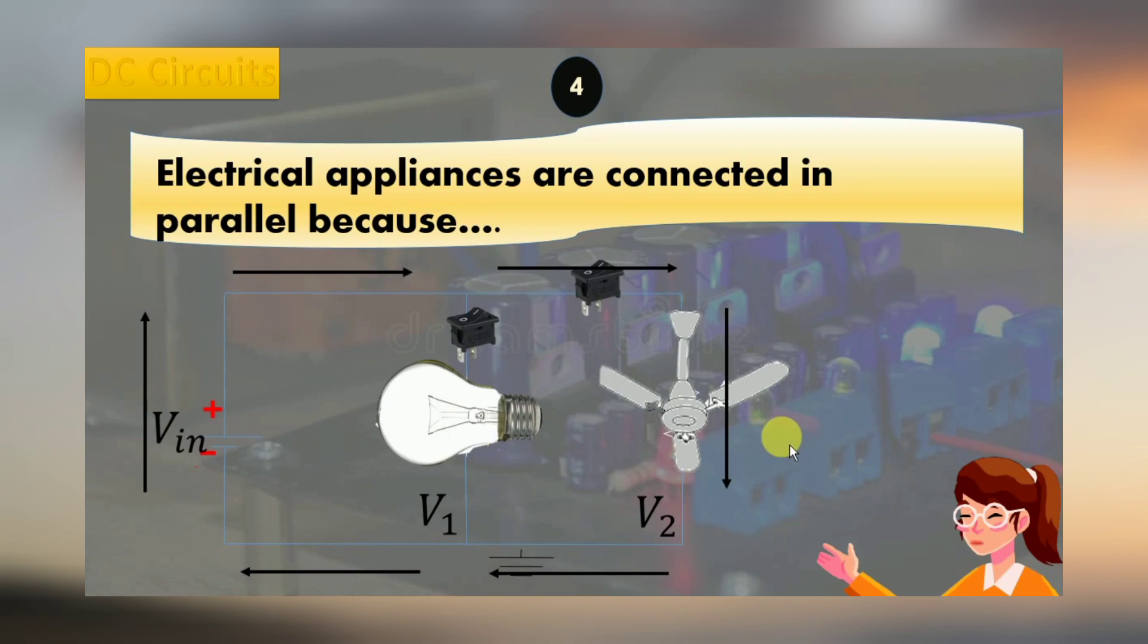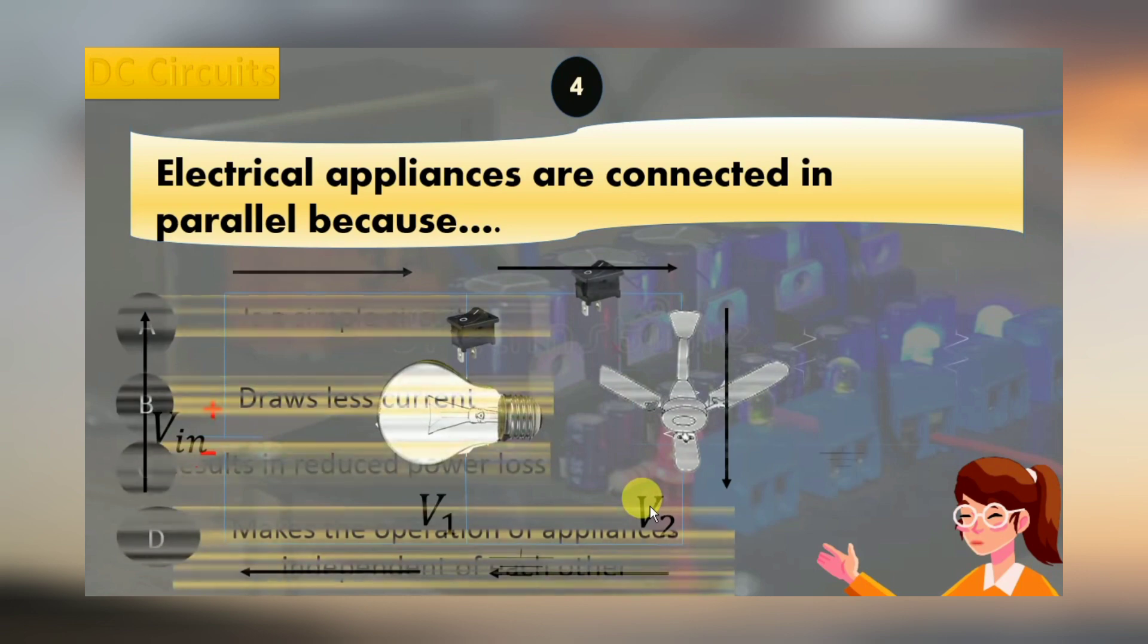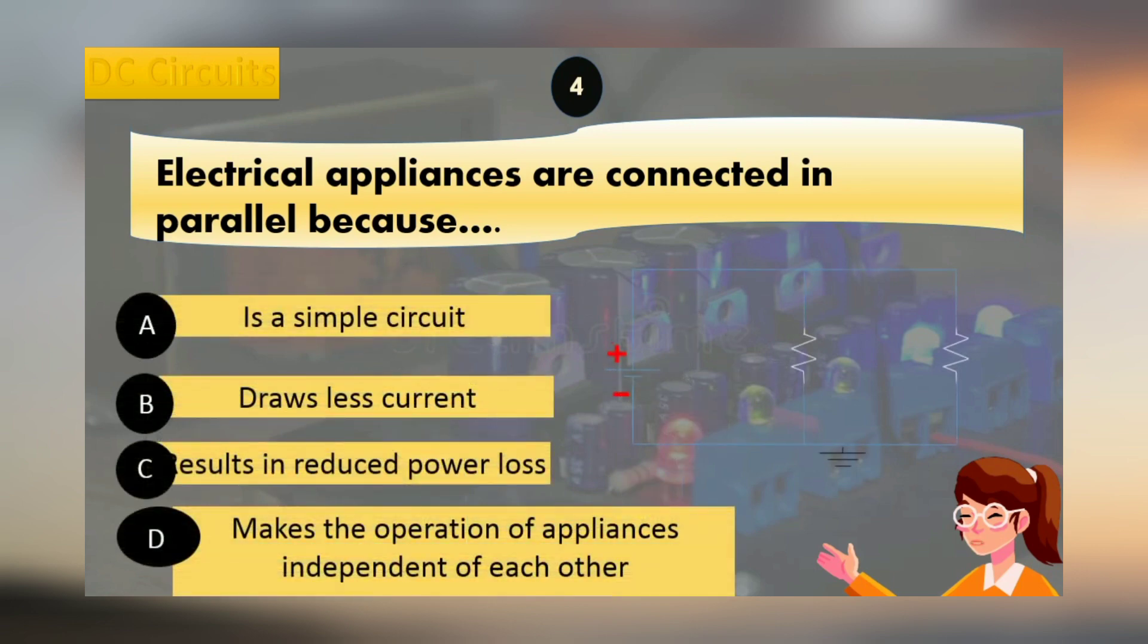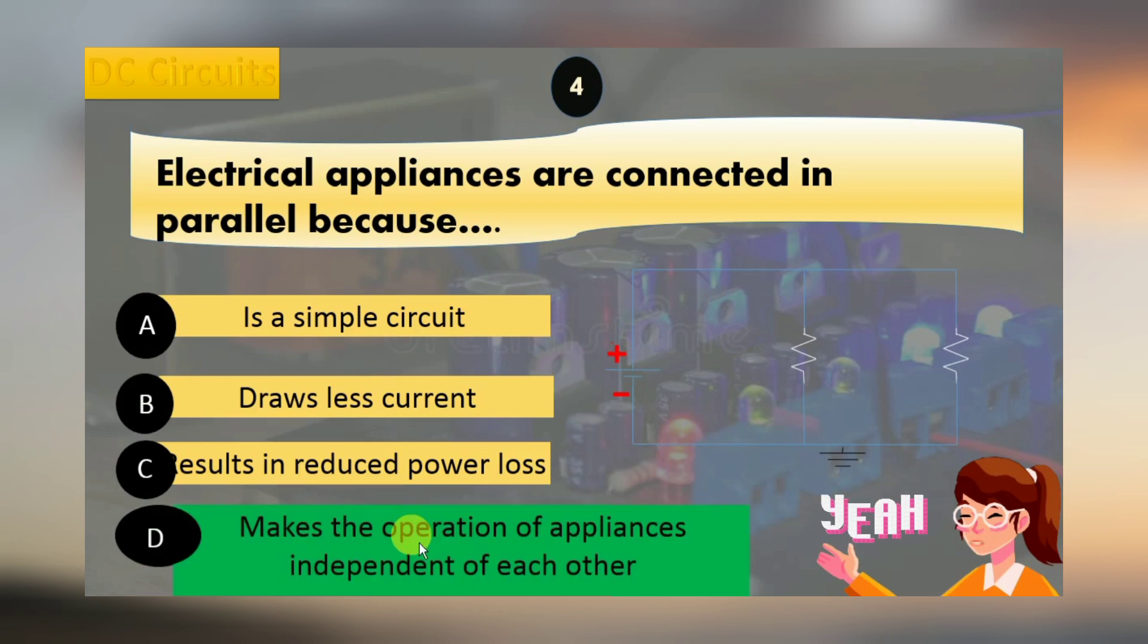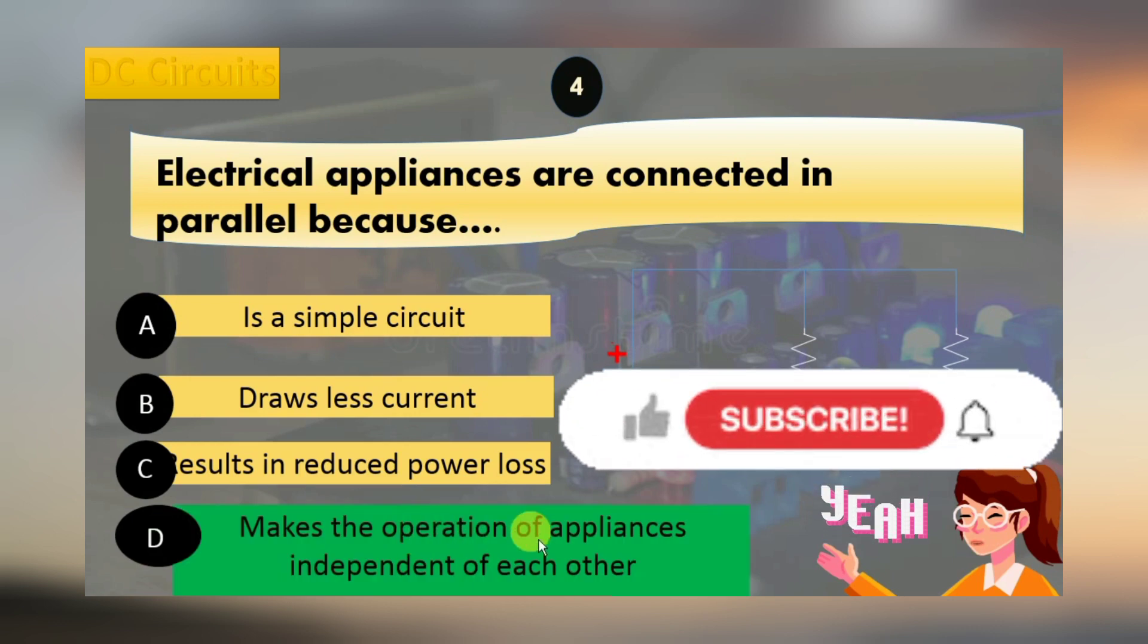Hence, we can say that electrical appliances are connected in parallel because it makes the operation of appliances independent of each other.